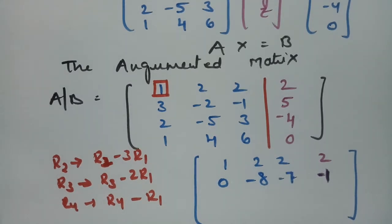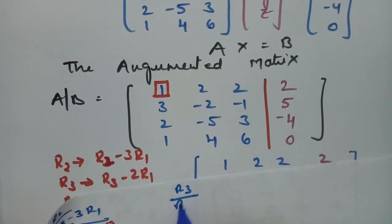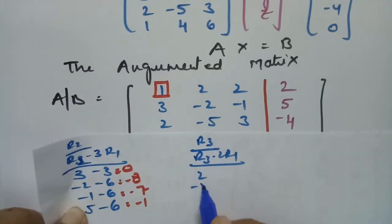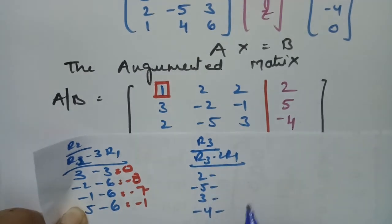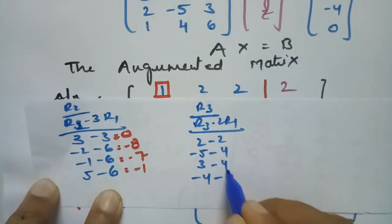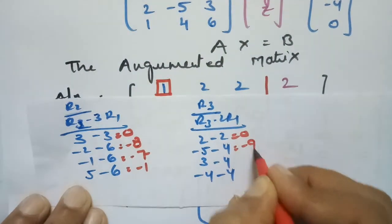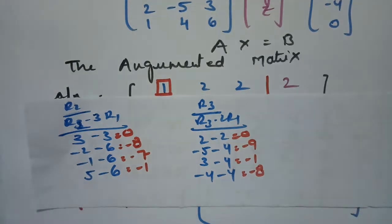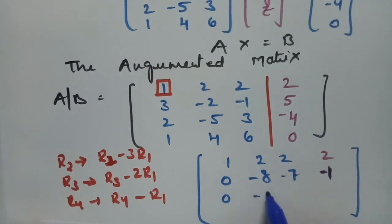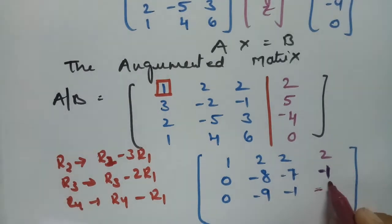The operation on R3 is R3 minus 2R1. Rho 3 is 2, minus 5, 3, minus 4. We subtract 2 times R1: 2 times 1 is 2, 2 times 2 is 4, 2 times 2 is 4, and 2 times 2 is 4. The resulting values are: 0, minus 9, minus 1, and minus 8. So R3 becomes 0, minus 9, minus 1 | minus 8.